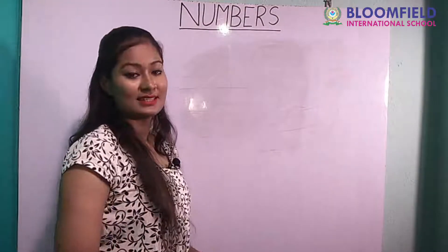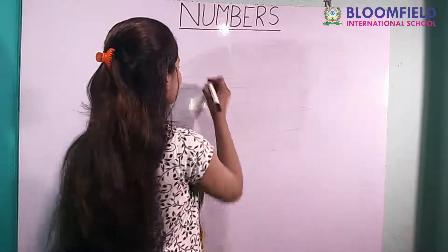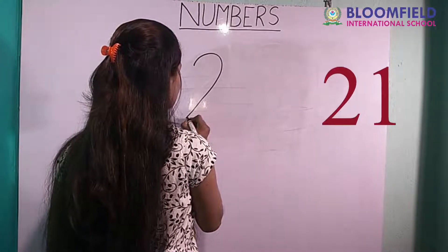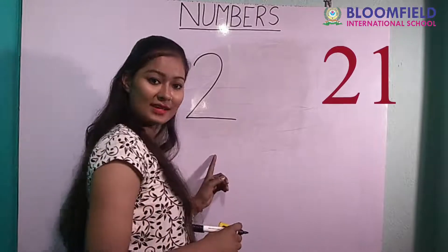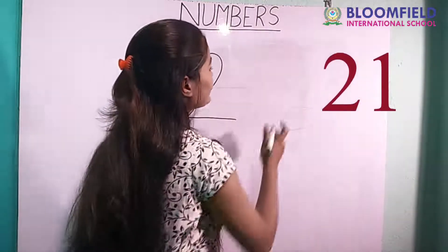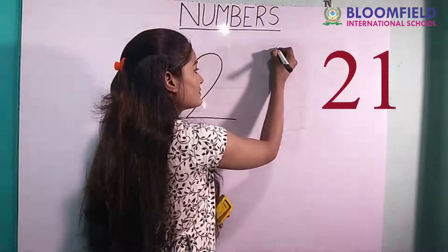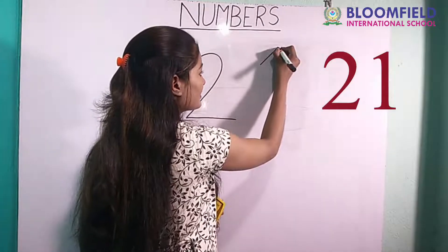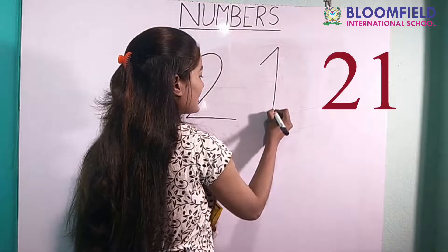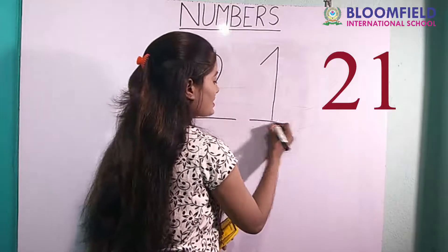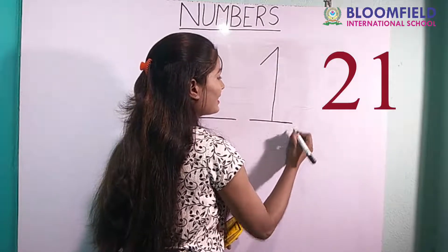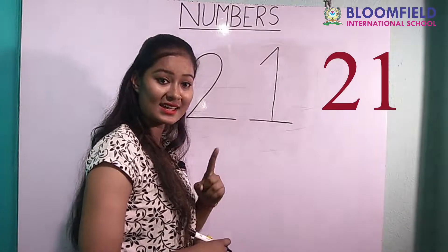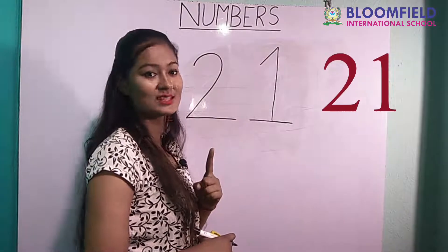Next: small curve, then small slipping line, then slanting line. One standing line, then small slipping line. Two one. Yes. Two one. Twenty one.